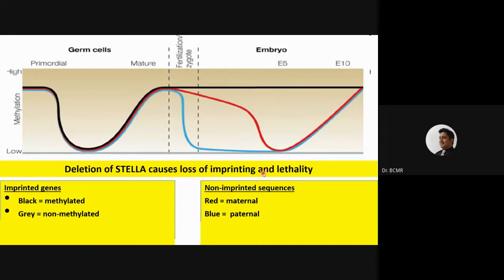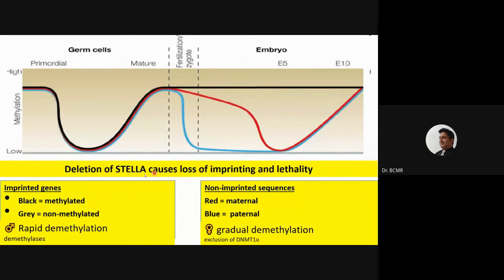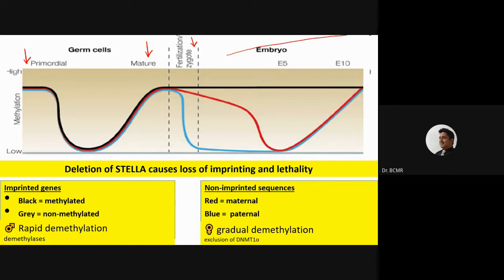This is what we were discussing yesterday. I hope I'm reviewing clearly — if you have any questions please do ask. There are global methylation and demethylation events to the whole genome during the early stages of growth. You can take it from the time the primordial germ cell formed. Here we have the mature gametes, here fertilization is occurring, and from here on it is growing into an individual — the embryo stages.